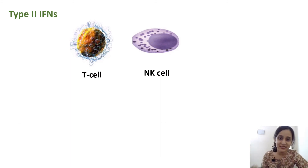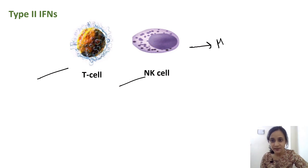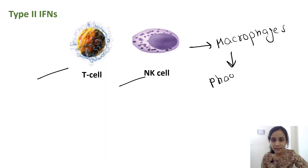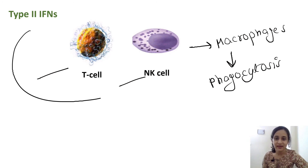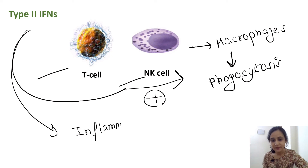Now, Type 2 interferons. Type 2 interferons are produced by T cells and natural killer cells. They stimulate macrophages to undergo phagocytosis. They also induce inflammation. So that is all about interferons.